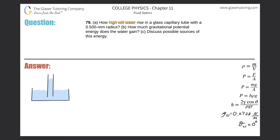Problem 79: how high will water rise in a glass capillary tube with a 0.5 millimeter radius? This is about capillary action. The capillary action formula states that the height a fluid will obtain in a small tube equals two multiplied by the surface tension of the fluid, multiplied by the cosine of the contact angle of the fluid and the wall of the tube, divided by the density of the fluid multiplied by gravity and the radius of the tube.